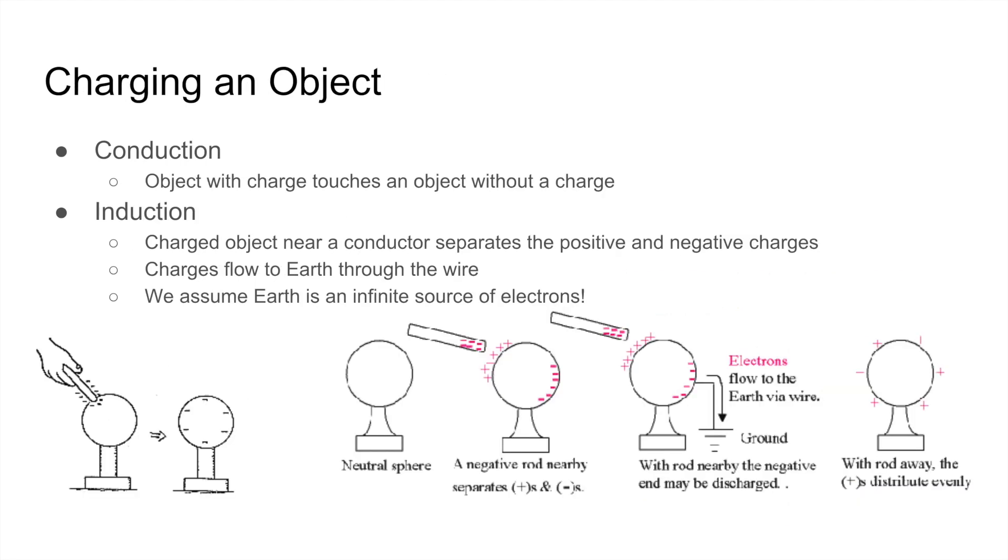Now there are two main types of ways to charge an object. The first type is conduction, which is when an object with charge touches an object without a charge. So in the leftmost diagram right here, you see a negatively charged rod touching a sphere and giving that negative charge to the sphere when it actually comes into contact with it.